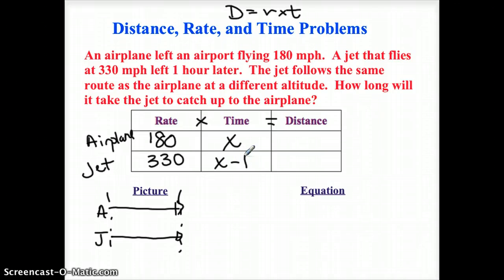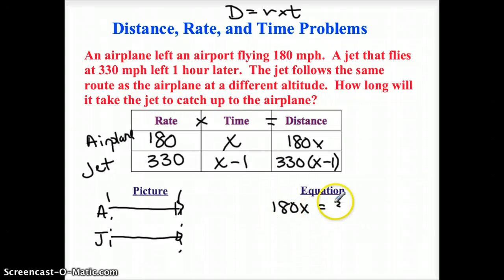Okay. And remember that distance is rate times time. So I'm going to say 180 times X, 180X is the airplane's distance. And for the jet, its distance is 330 times the quantity X minus one. And because I know that the airplane and the jet end up going the same distance based on my wonderful drawing, I can say that my equation is 180X must equal 330 times the quantity X minus one.